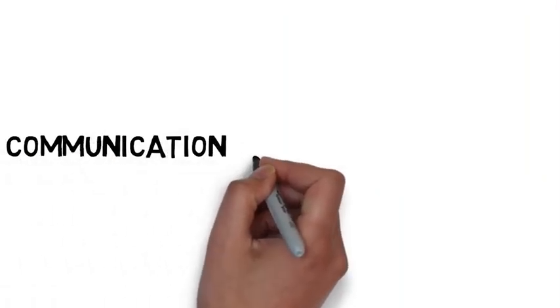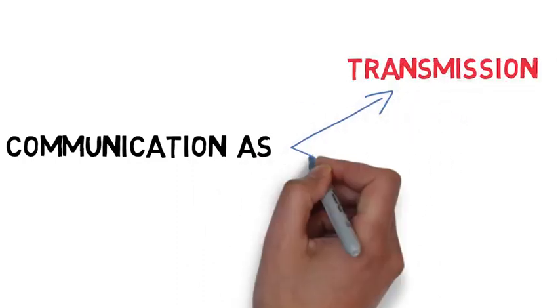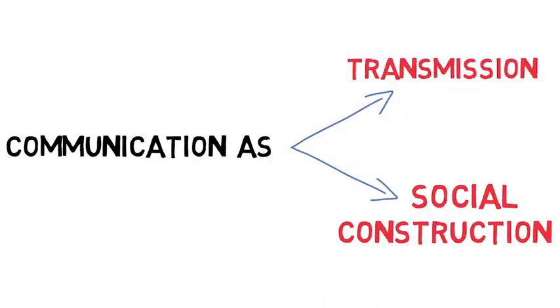So, in this module, we'll look at different ways of theorizing communication, different explanations for what's going on when we interact with other people. Specifically, we'll discuss two main communication perspectives, communication as transmission and communication as social construction, and why all this matters for our understanding and practice of group interaction and working with other people.